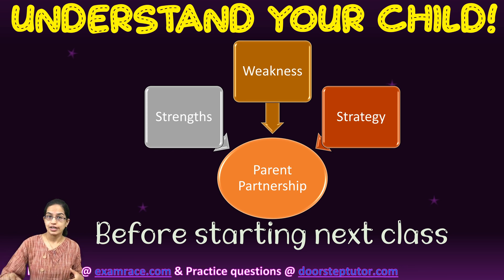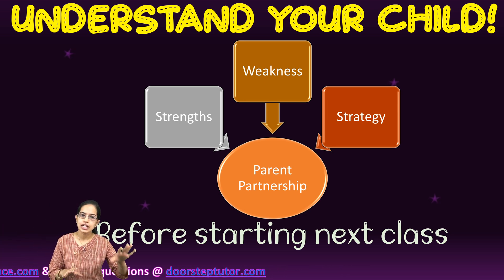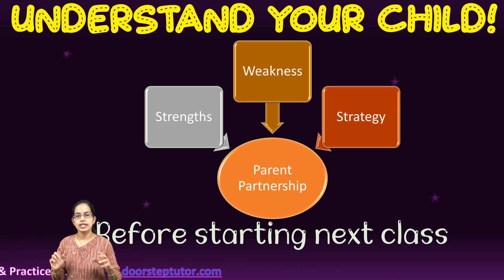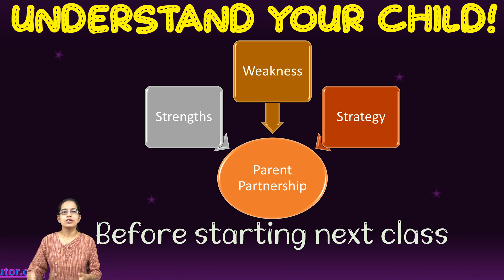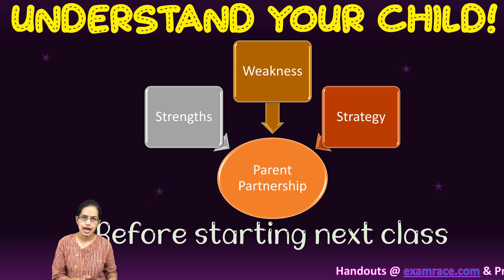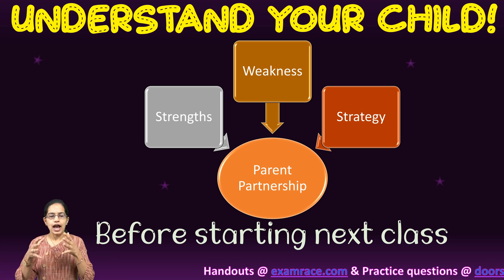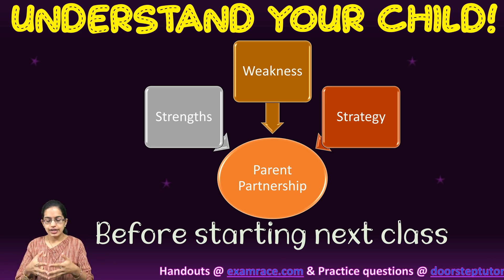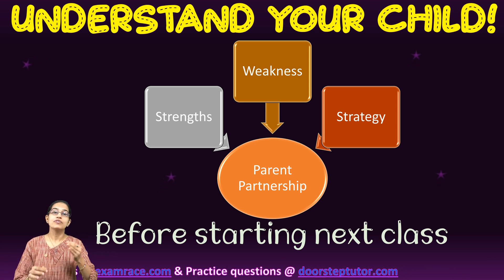The idea is to find out the strengths of a child, the weak areas of a child, and the strategy that should be followed for the next class. What you have to do is appear for the ISET just after you have completed one standard. It's available for class 1 to 10 and the idea is to focus on the weak areas.